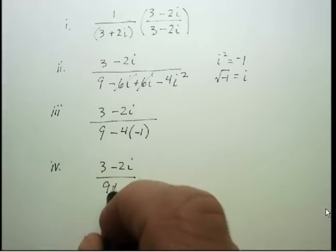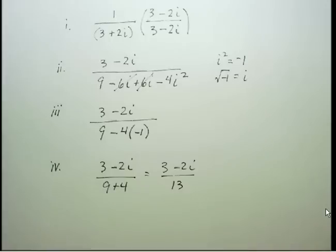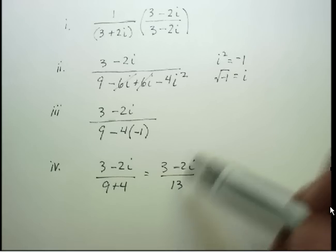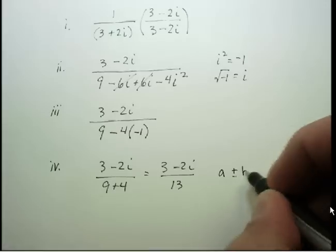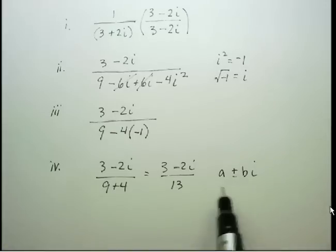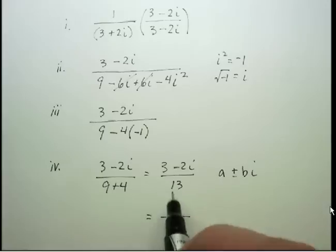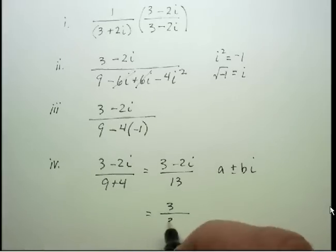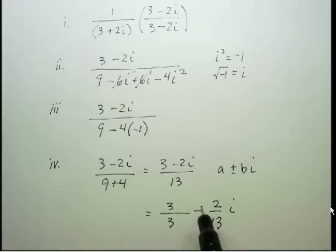So in the denominator I have 9 minus a negative 4, which is 9 plus 4, giving me 3 minus 2i over 13. For some teachers this is an acceptable answer, but I personally like to convert to a plus bi form, where the denominator is separate for each term. So the final answer is 3 over 13 minus 2 over 13 times i.